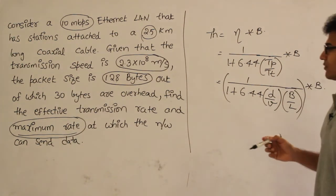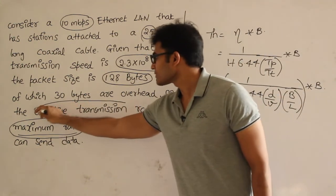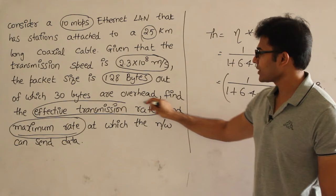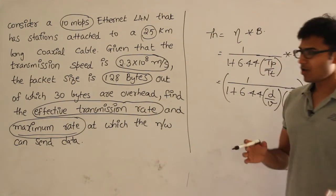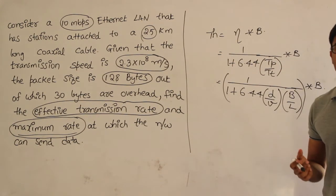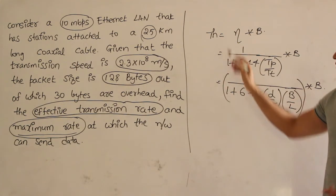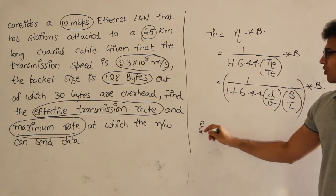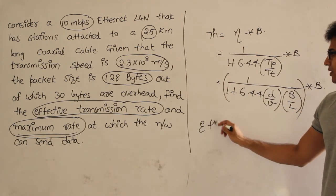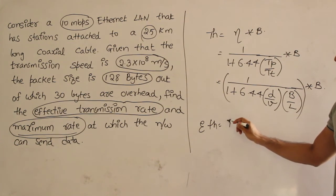Now, what is the effective transmission rate? Out of this entire throughput, what is really useful? Usefulness is about the data. Even though you have throughput as calculated, the effective throughput is actual throughput times the data fraction.